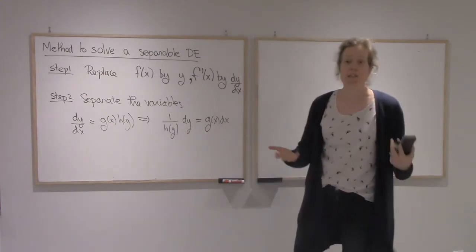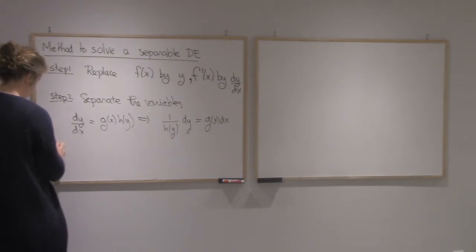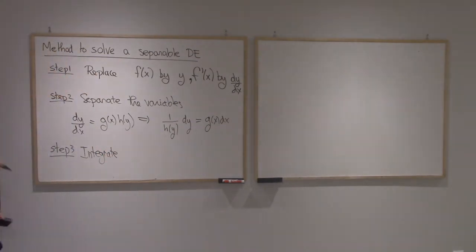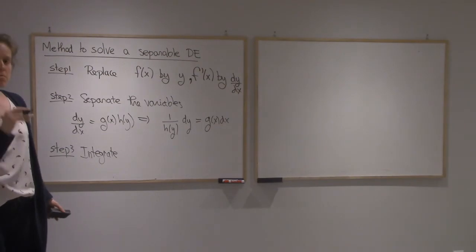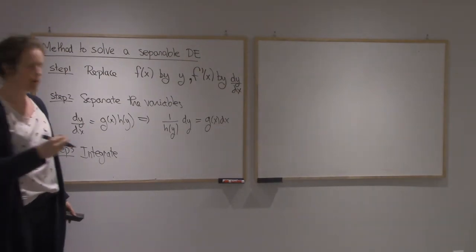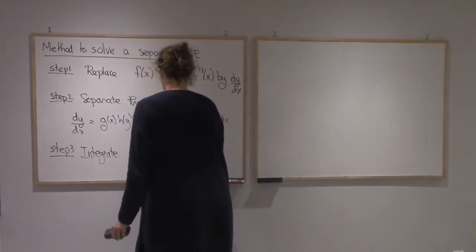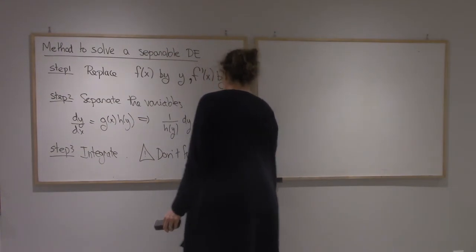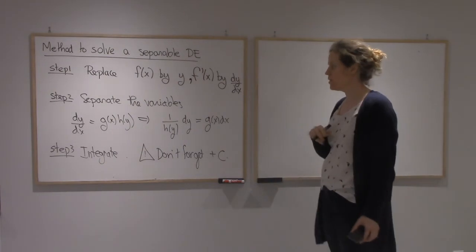Now these look like things that you can integrate, so that will be your next step. You integrate. You cannot forget the plus C here. It's not a minor deduction. It's going to affect your final answer a lot. And it's not like you can just add it in the end. The plus C will be inside the functions once you isolate.